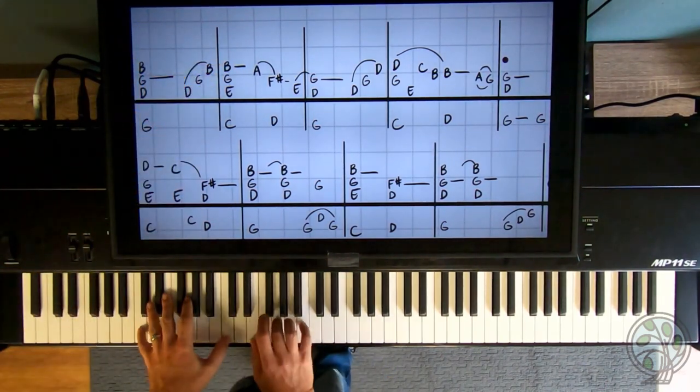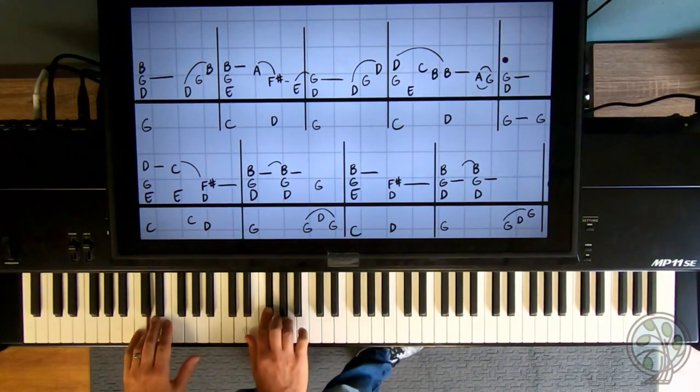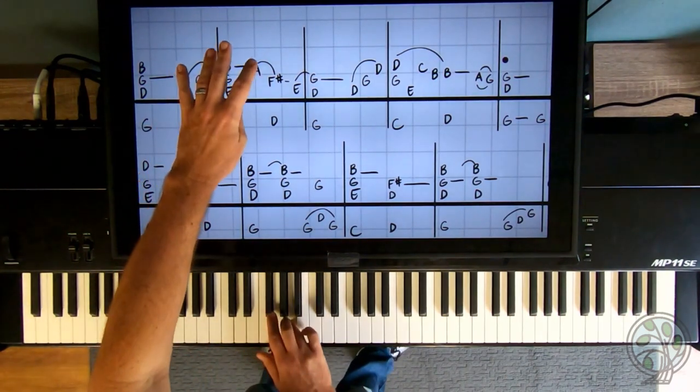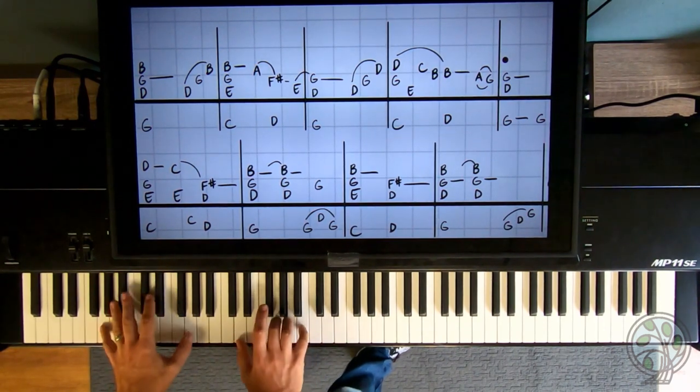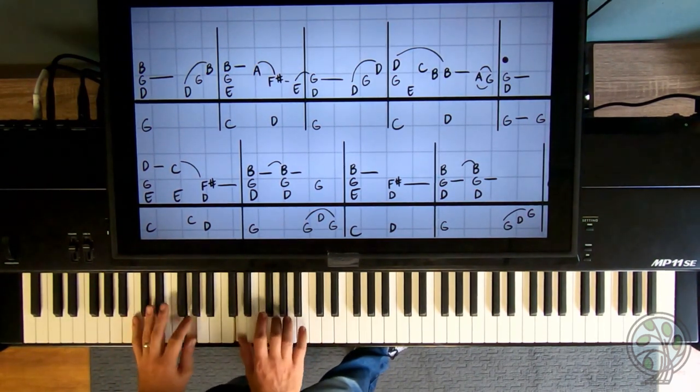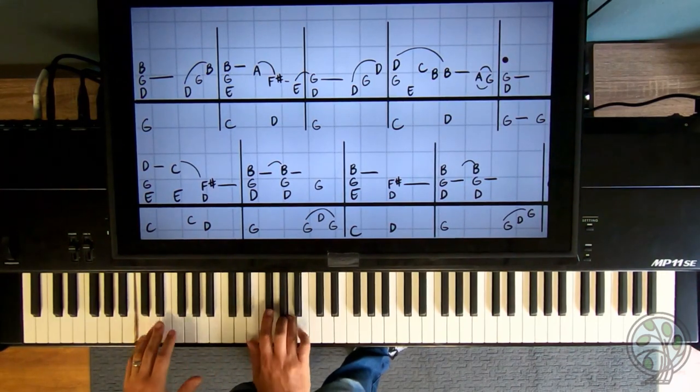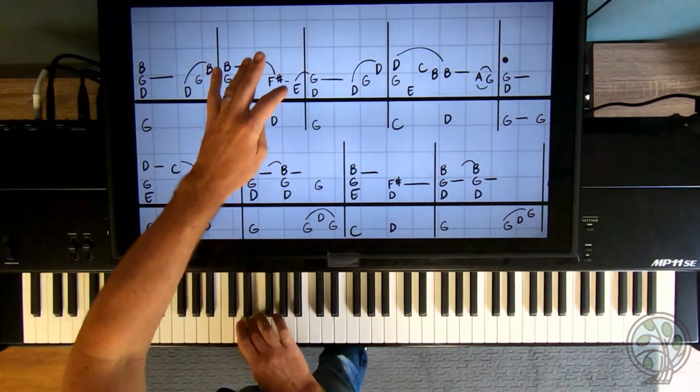E, G, B on the right. Left hand on a C. One, two, and three. So then we have an A. Then we go to F sharp. When we go to F sharp, we play a D on the left hand. So one, two, three, four, and. Two, and three, four, and. Then a D, an E.